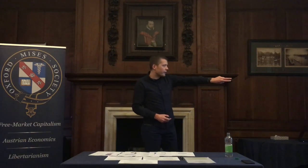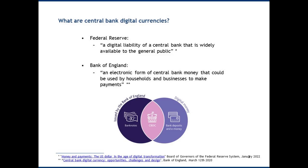There are two important footnotes in terms of each central bank's approach. The Fed defines CBDCs as 'a digital liability of a central bank that is widely available to the general public.' The Bank of England's definition from their 2020 report is 'an electronic form of central bank money that could be used by households and businesses to make payments.'